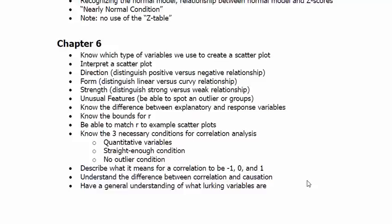Know the three necessary conditions for correlation: quantitative variables, straight enough condition, and no outliers. Quantitative variables means both variables are quantitative. Straight enough condition means we have a straight line that would approximate the relationship. It's straight enough to that line. And no outliers condition means that we don't have outliers, things that break the bivariate relationship.